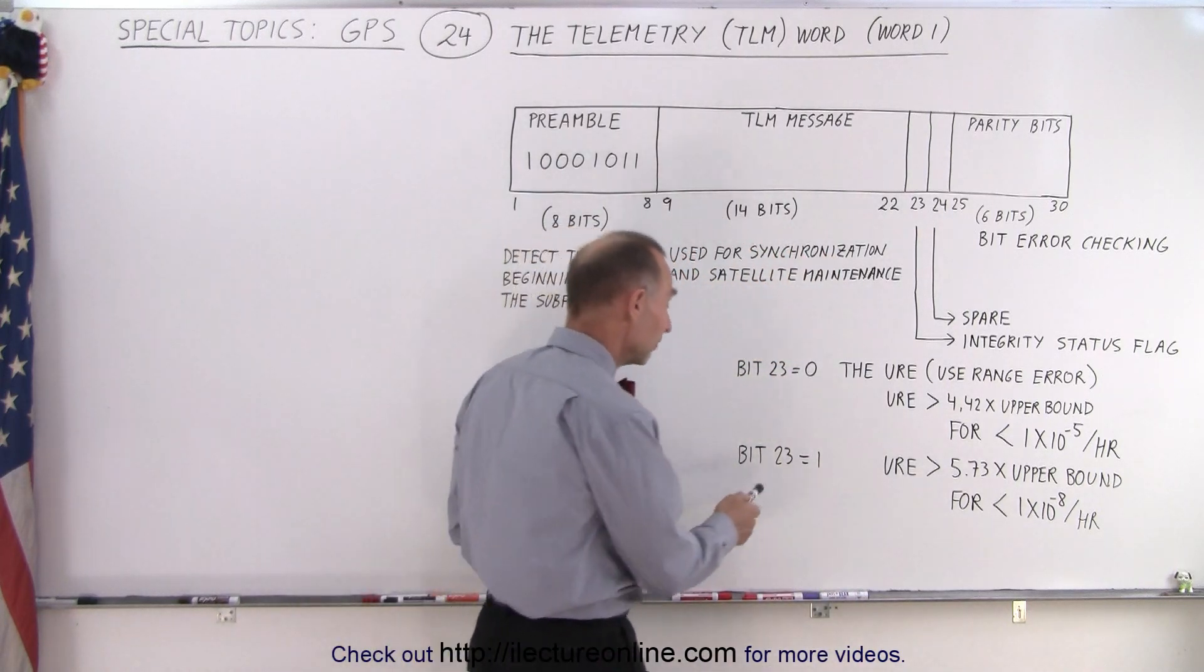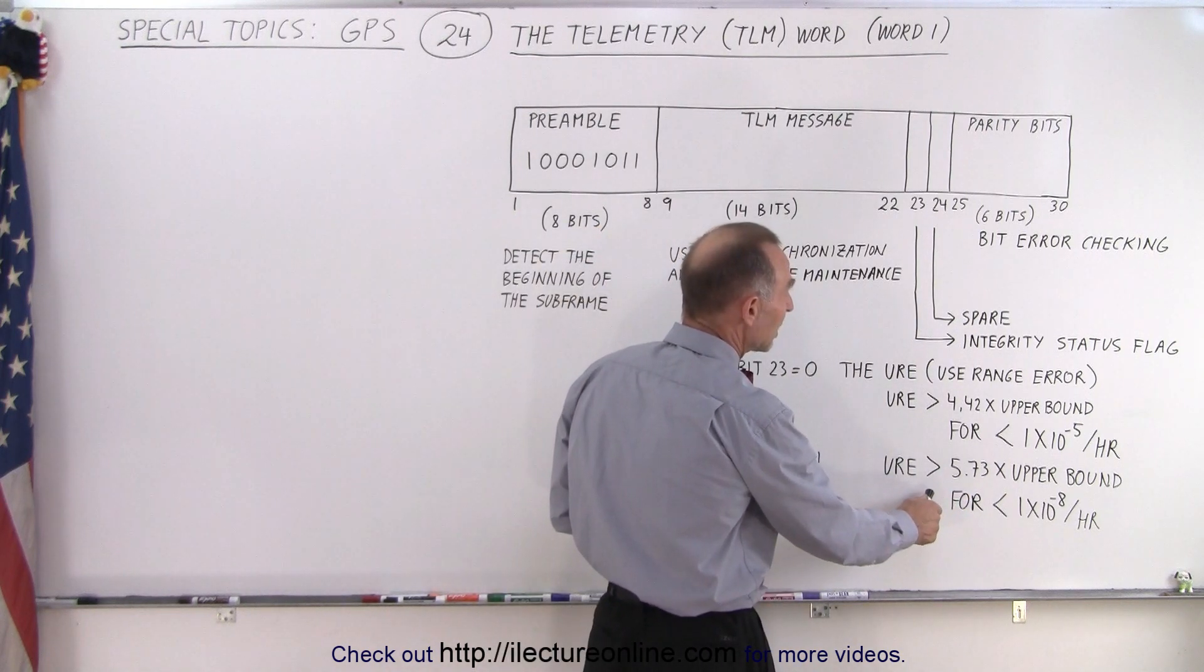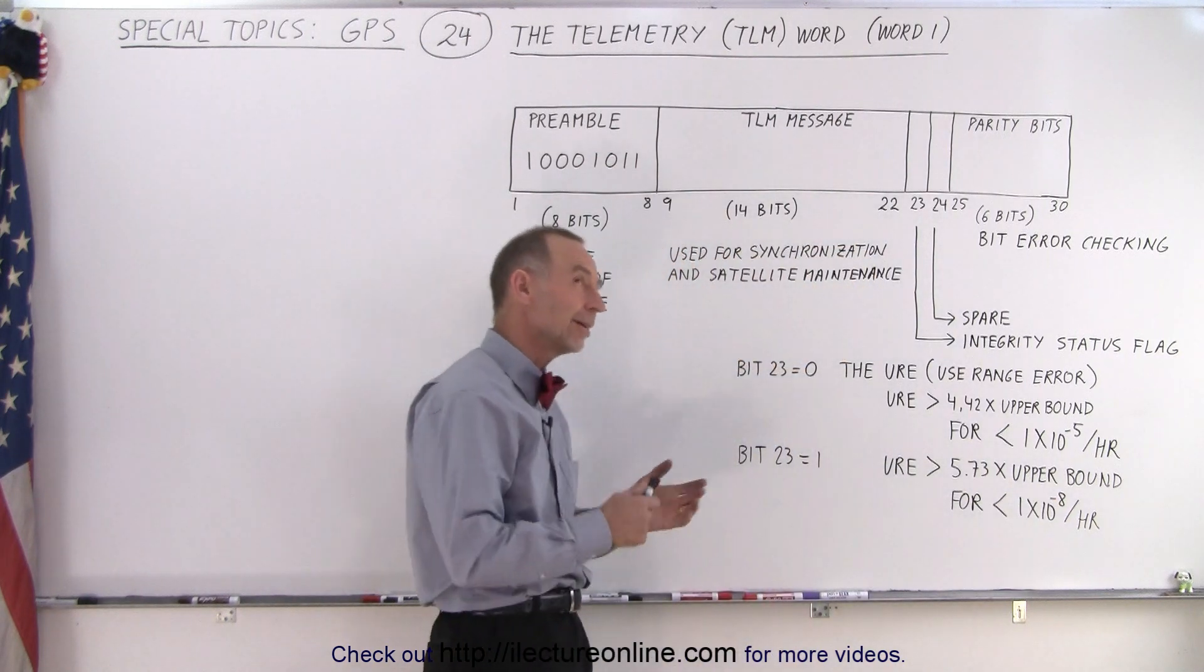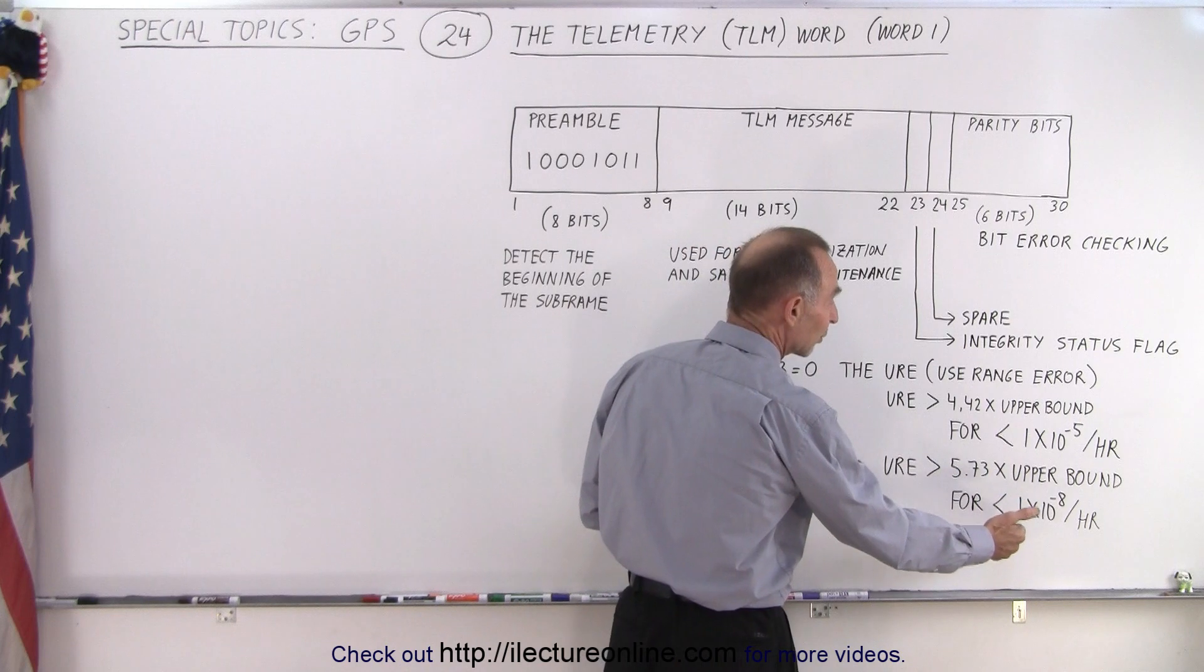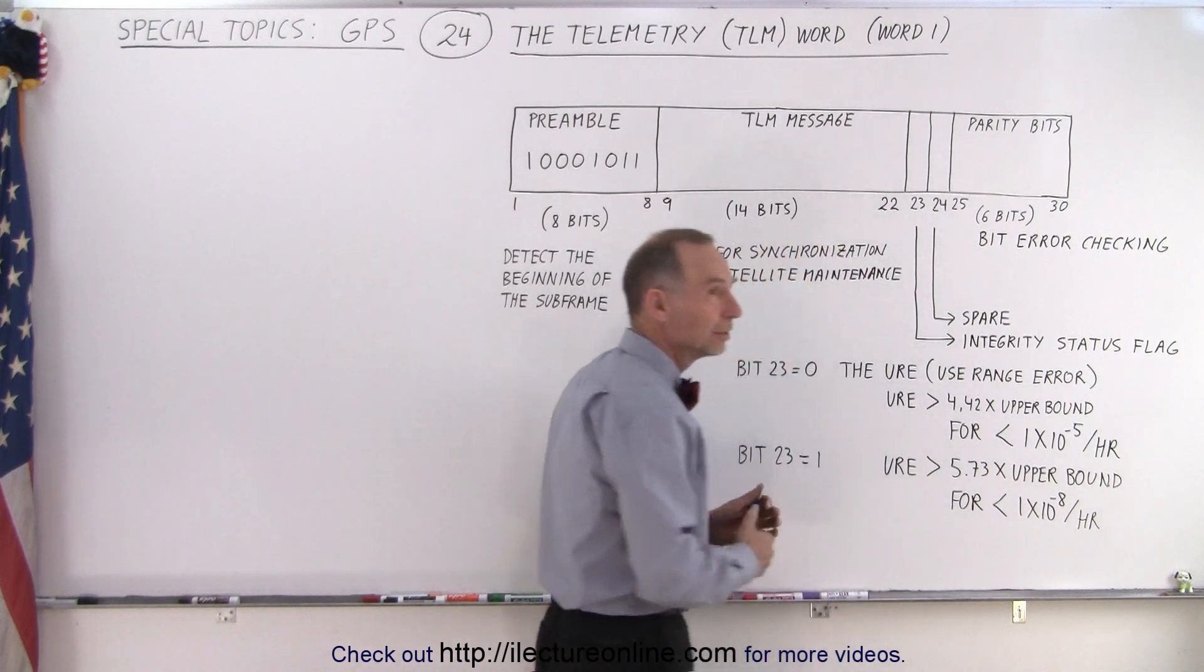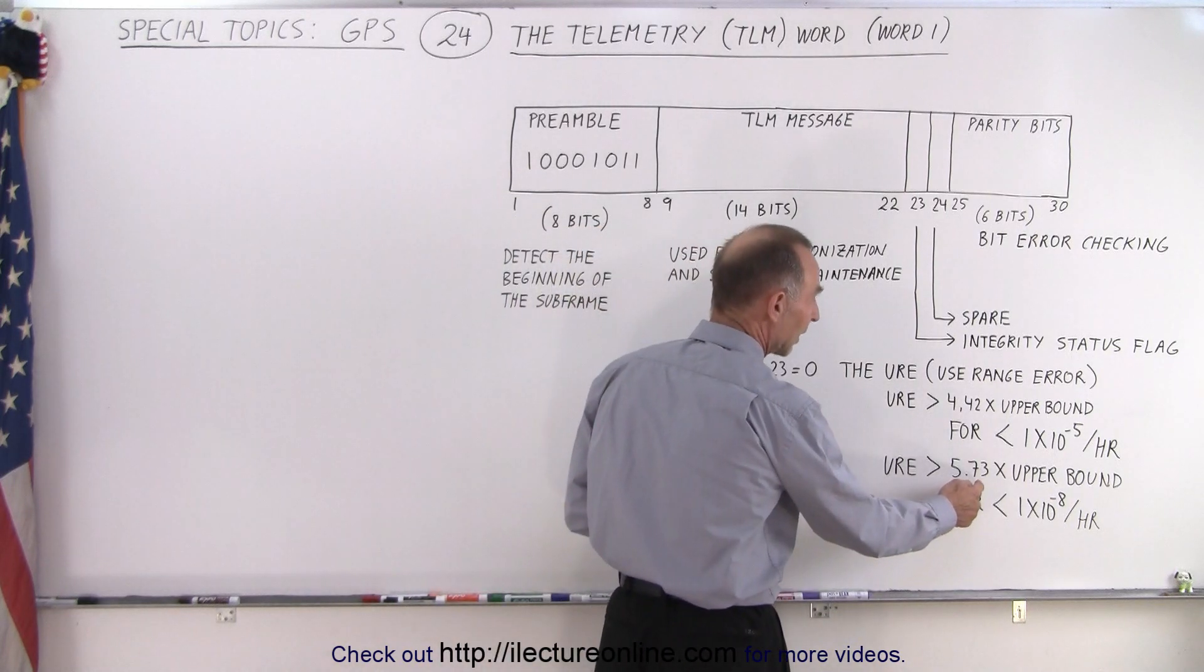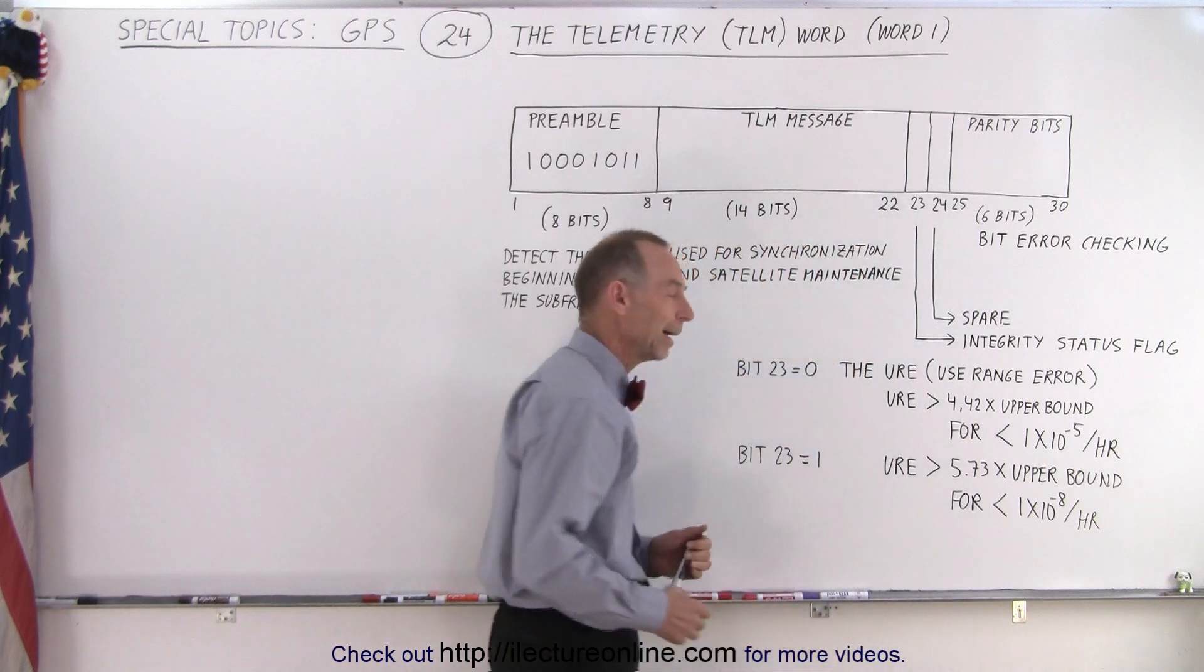Now, if the bit is set equal to one, then we can say that the URE will be - 10 to the 8 is 100 million - in other words, there will be less than one in 100 million occurrences per hour, or you can go 100 million hours before this happens, where the URE is 5.73 times the upper bound.